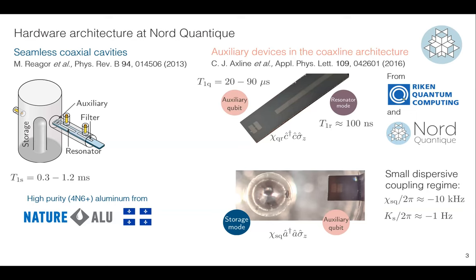We couple these two by slightly inserting the chip inside the microwave cavity — the chip barely enters the cavity. We work in the small dispersive coupling regime, with chi of only about 10 kHz, which leads directly to a self-Kerr of something about 1 Hz. This is quite critical for GKP, because the Kerr effect will have a large effect. The lifetimes are definitely not state-of-the-art, so we have quite a lot of room for improvement.